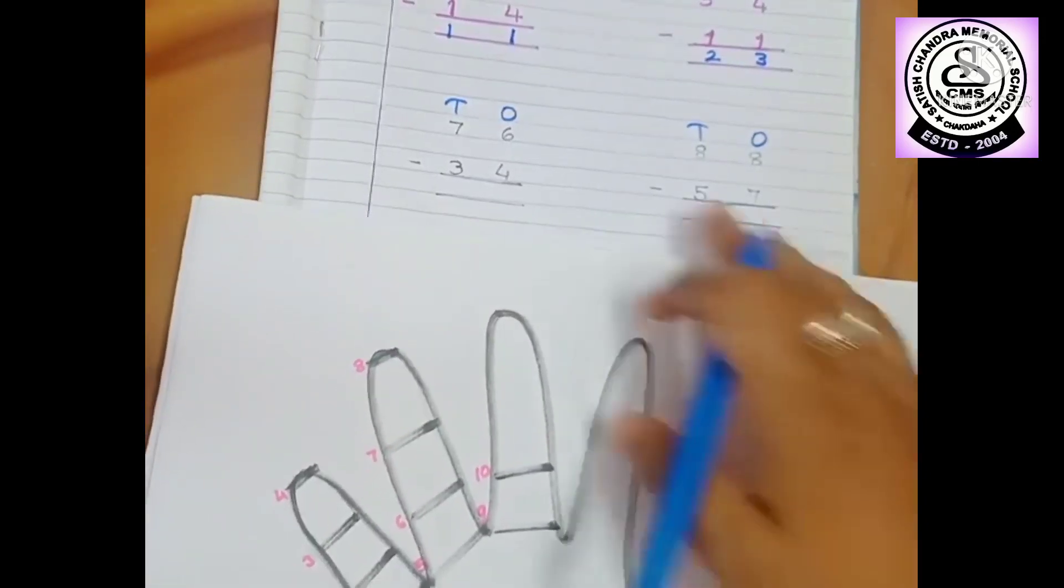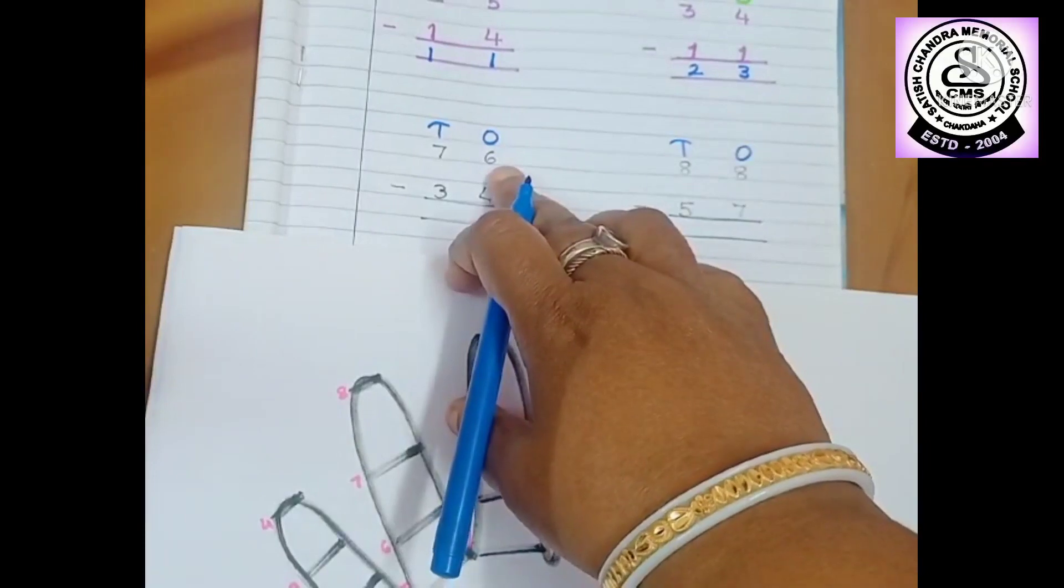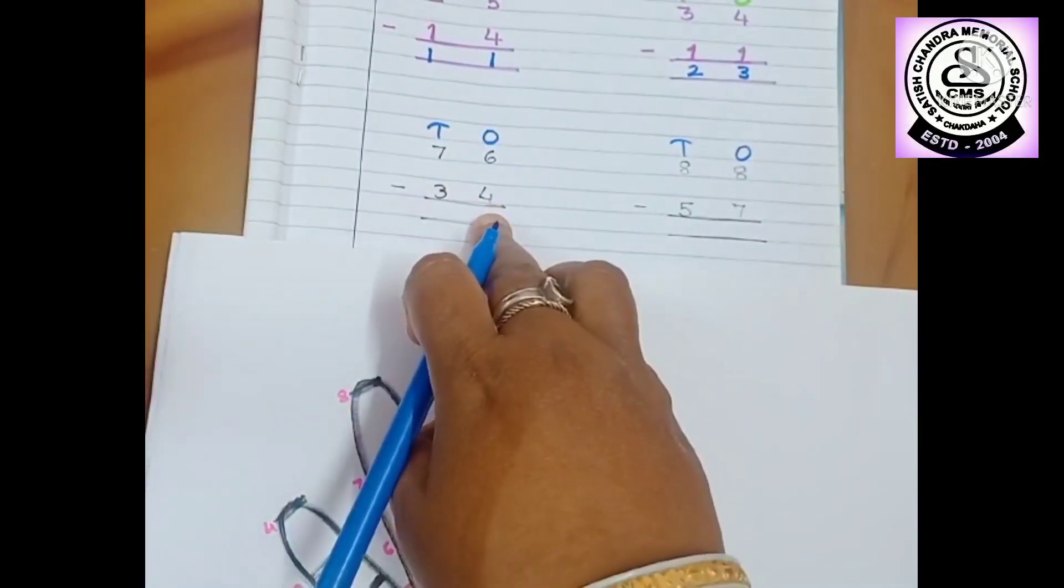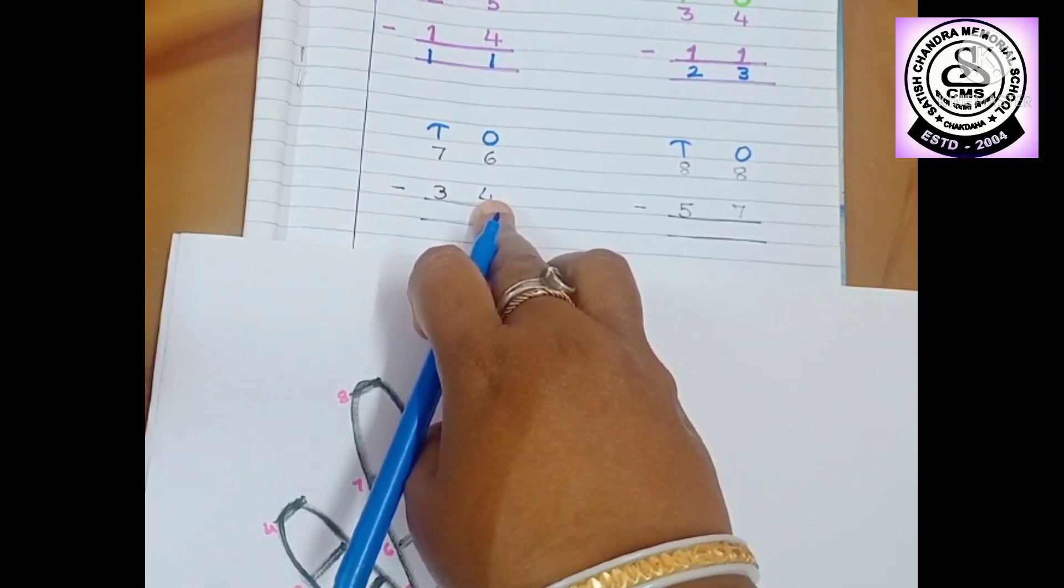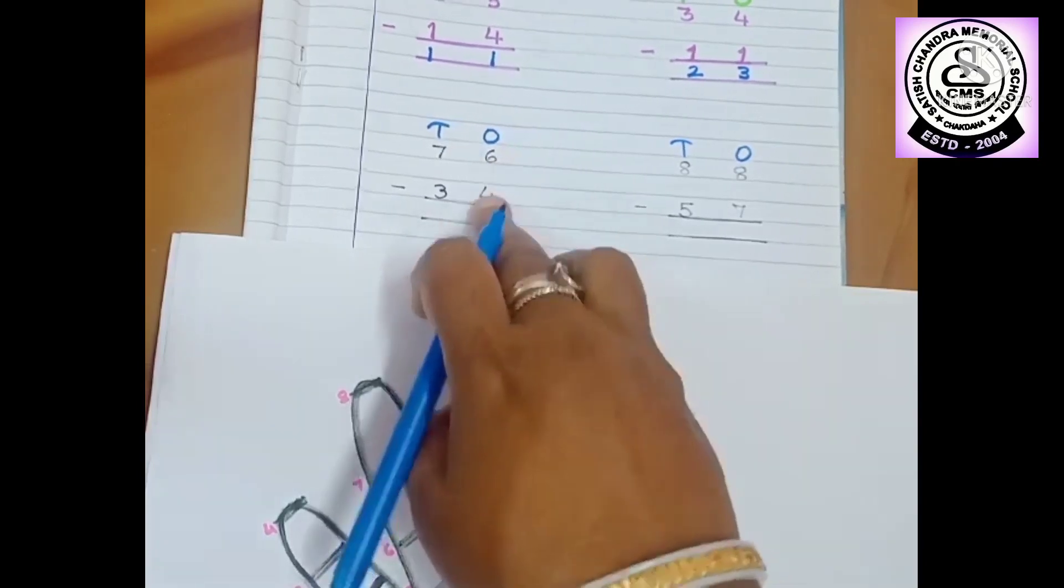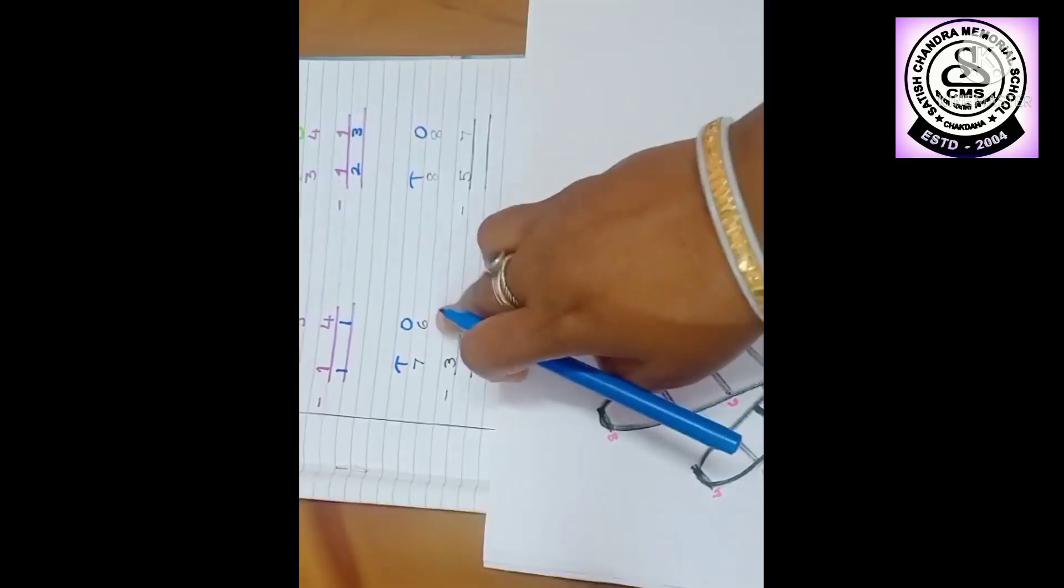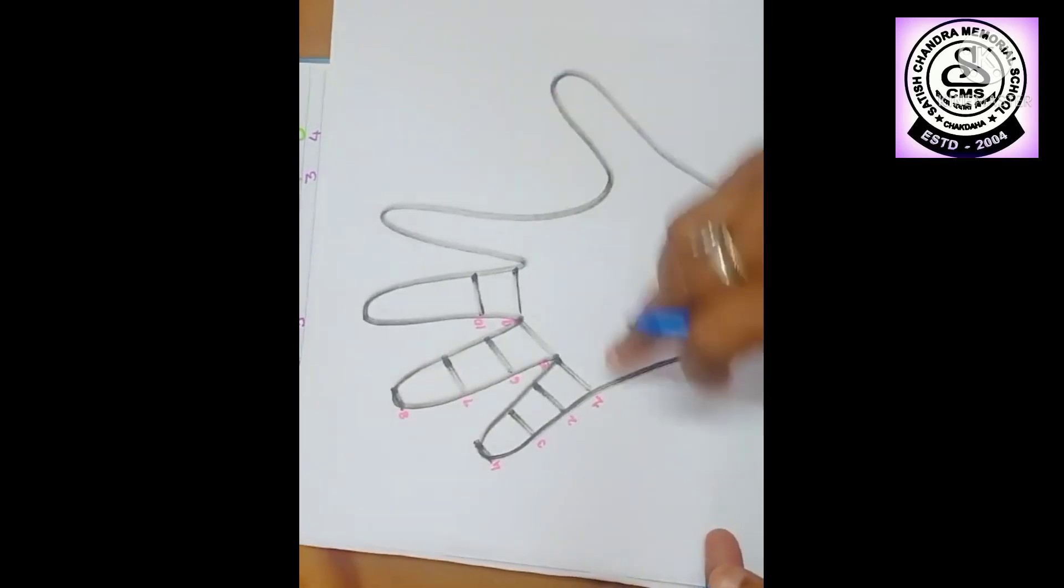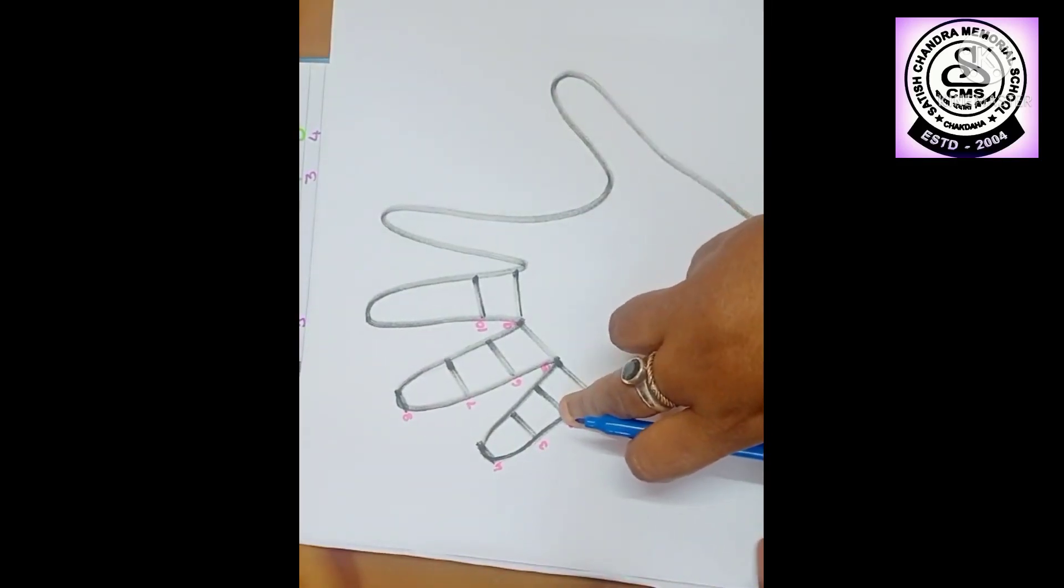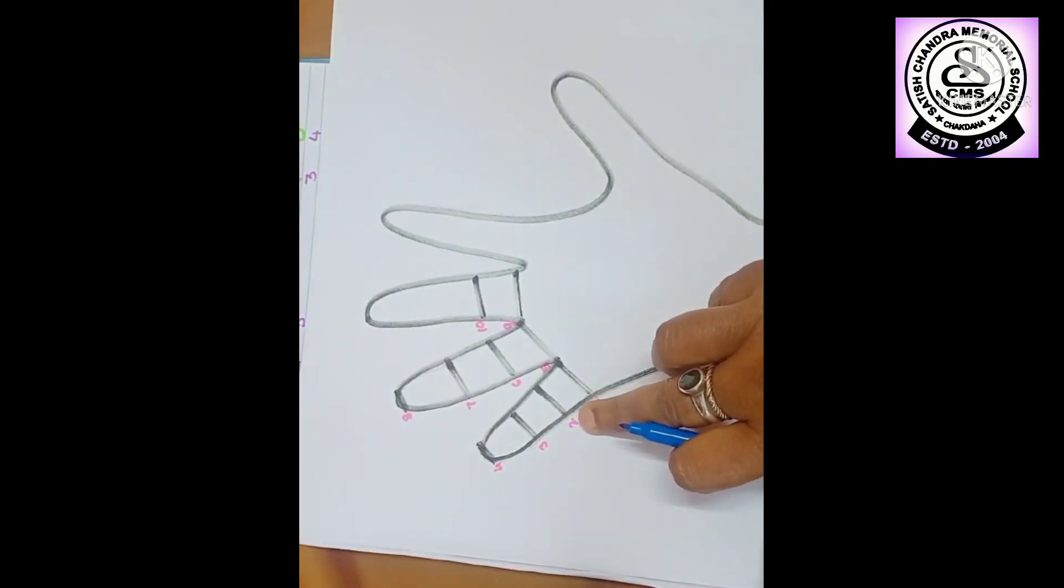Third one. Again, once placed 6 minus 4. So after 4 children, what is the number? And how much? Up to which number you have to count? Up to which number you have to count it? Up to 6. So after 4, 5, 6. So what is the house number? 2.